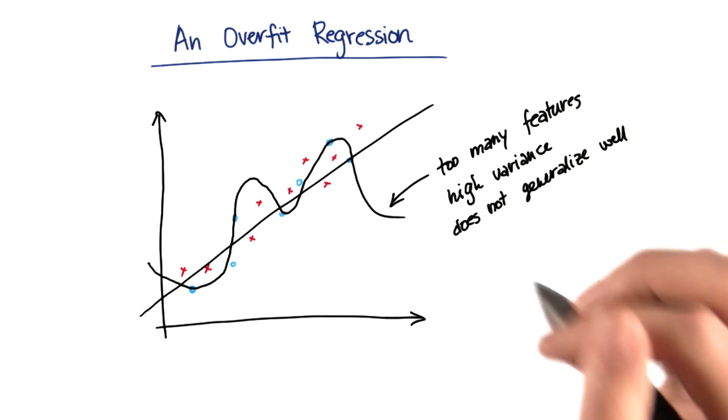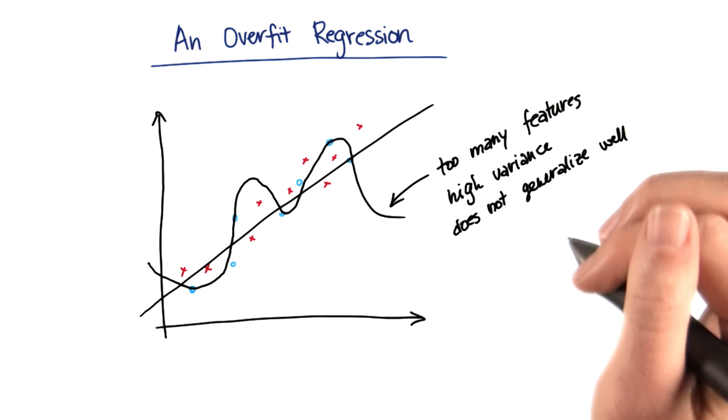So this wiggly line is going to be a classic case of where I've used too many features. It's a very high variance solution, and it's not going to generalize well.